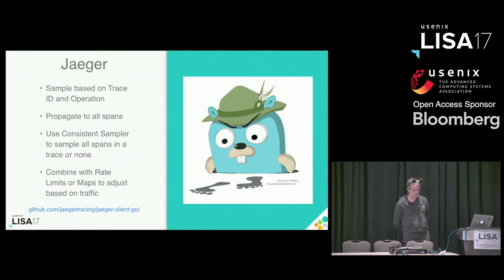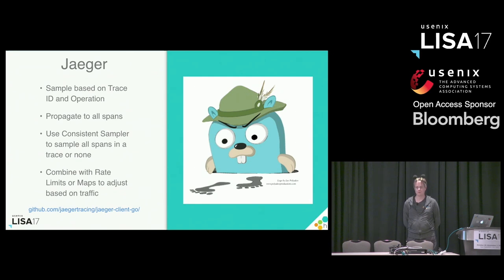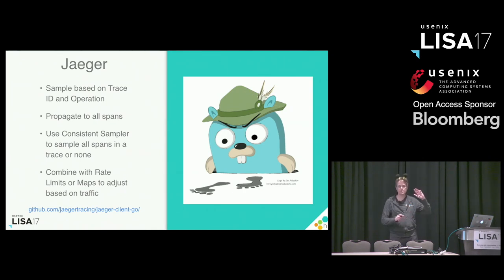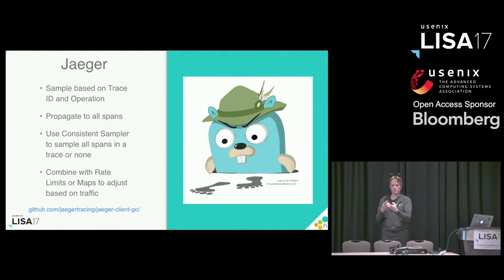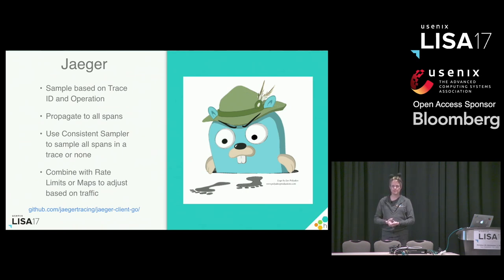The Jaeger distributed tracing system has a slightly different constraint: it has agents running on different servers that can't coordinate, but it wants to make the same decision about whether to sample a trace on all nodes. A trace is the entire execution through your entire service; a span is the result of either one network hop, one server, or some subcomponent of code. You want every member of a trace to make the same decision about whether to sample spans or not.